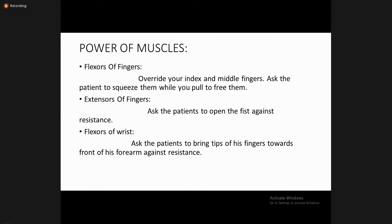For flexion of the fingers, override your index and middle fingers and ask the patient to squeeze them; then pull to free them to check finger flexors. For extensors of the fingers, ask the patient to open the fist against resistance. For flexion of the wrist, ask the patient to bring the tips of the fingers toward the front of the forearm against resistance.